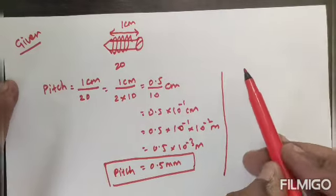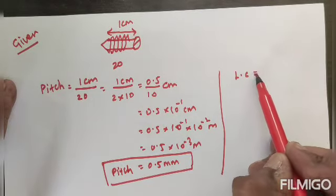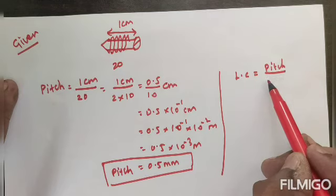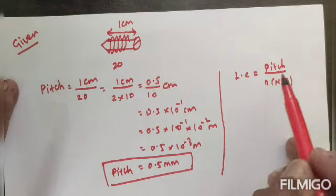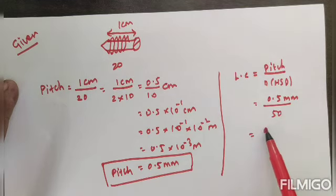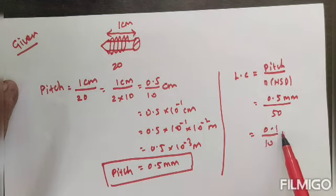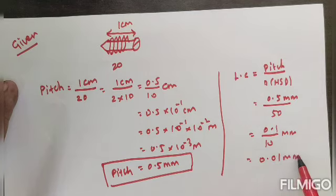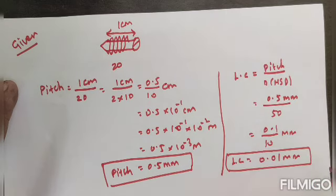Next, we easily find the least count of the given screw gauge. Least count equals pitch value divided by number of head scale divisions. The number of head scale divisions given is 50. The pitch value we just found is 0.5 millimeter, so least count = 0.5 divided by 50, which equals 0.01 millimeter. This is the least count of the given screw gauge. I hope you understand this question.